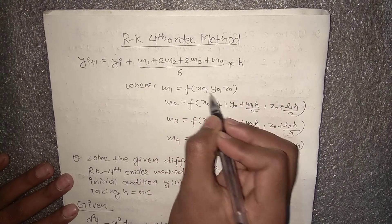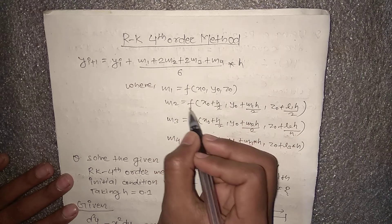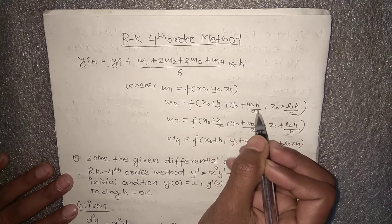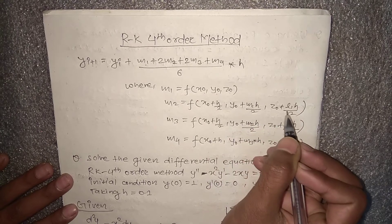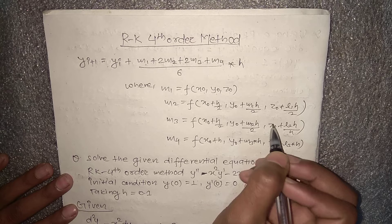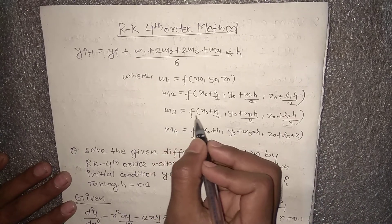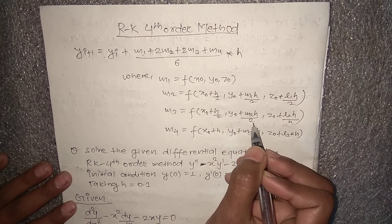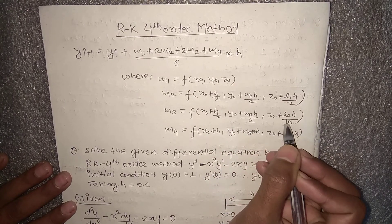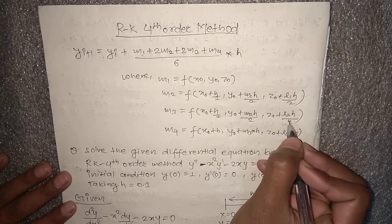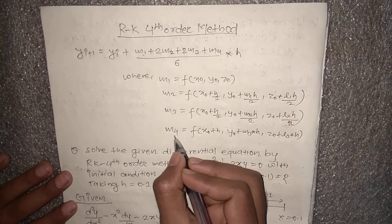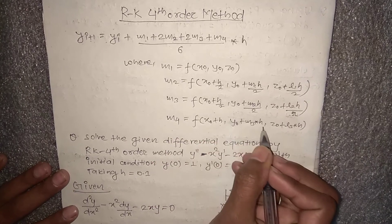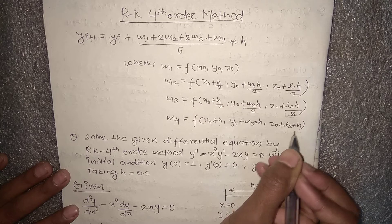Here m1 equals f(x₀, y₀, z₀). m2 is calculated as f(x₀ + h/2, y₀ + m1·h/2, z₀ + l1·h/2). m3 equals f(x₀ + h/2, y₀ + m2·h/2, z₀ + l2·h/2). And m4 equals f(x₀ + h, y₀ + m3·h, z₀ + l3·h). We need to remember this formula to solve using the RK4 method.